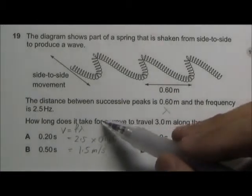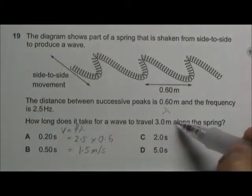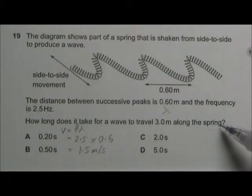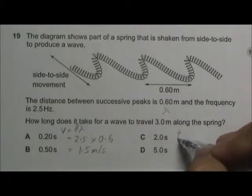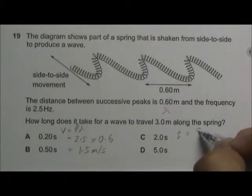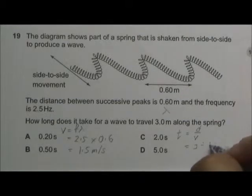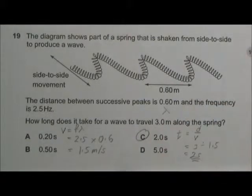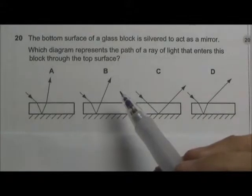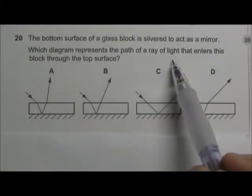How long does it take for the wave to travel 3 meter along the spring? We can use the distance-speed-time formula. T equals distance divided by the speed, so it will be 3 divided by 1.5, we get 2 seconds, answer C.